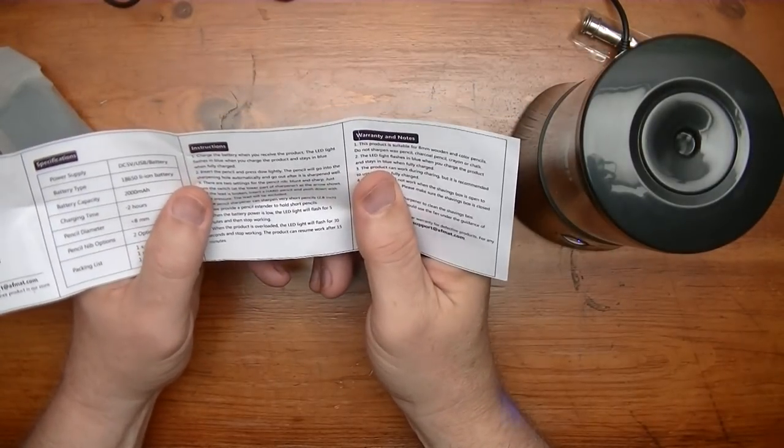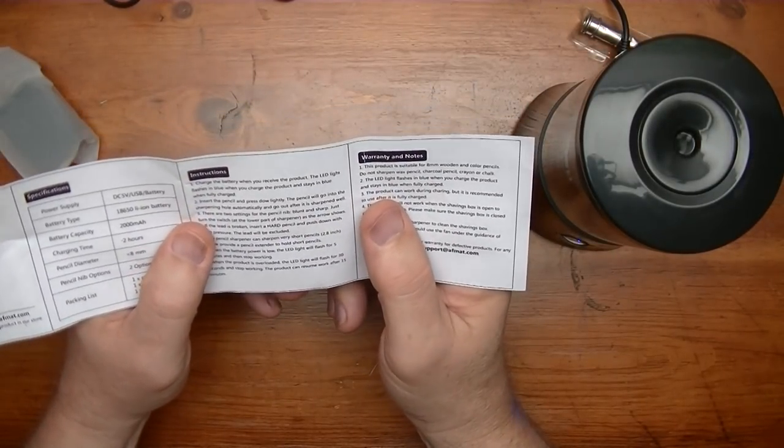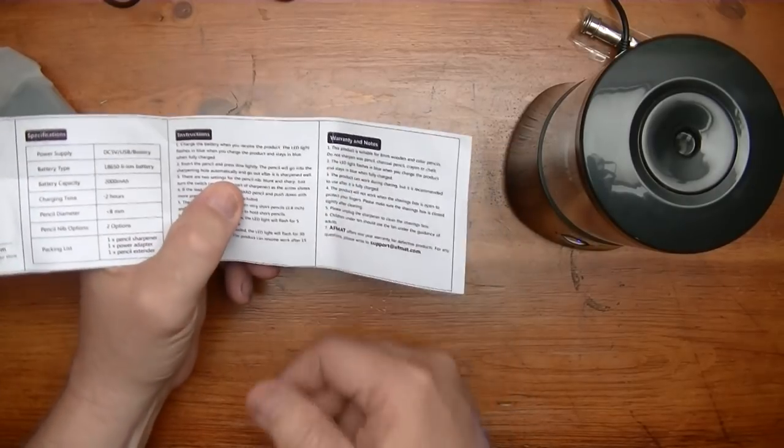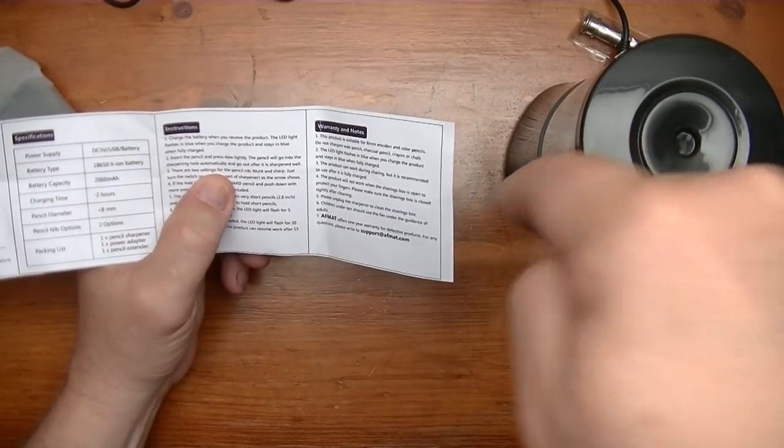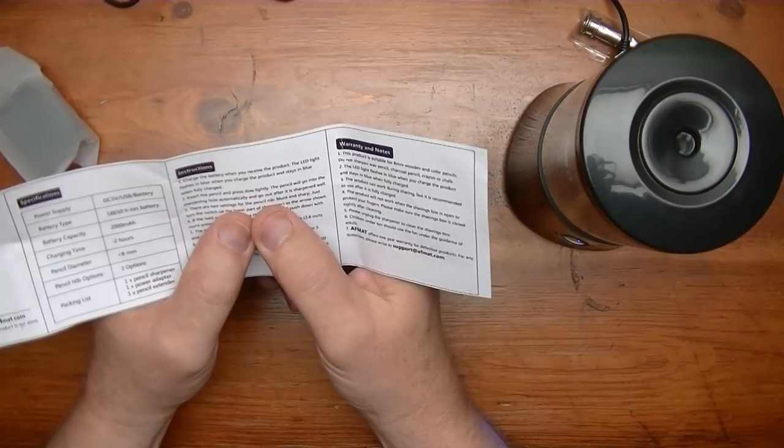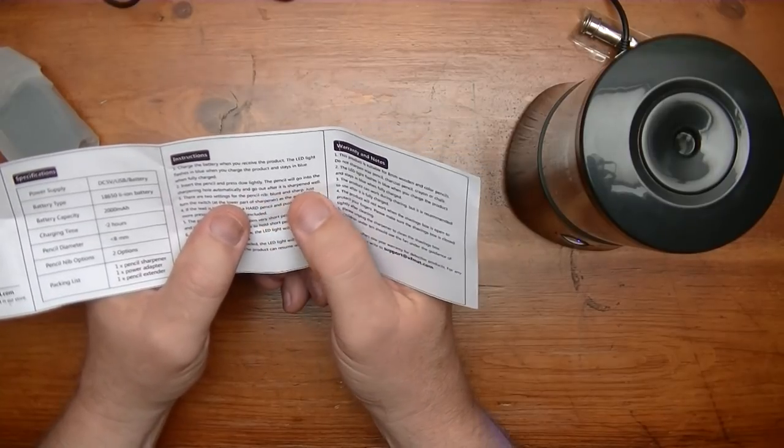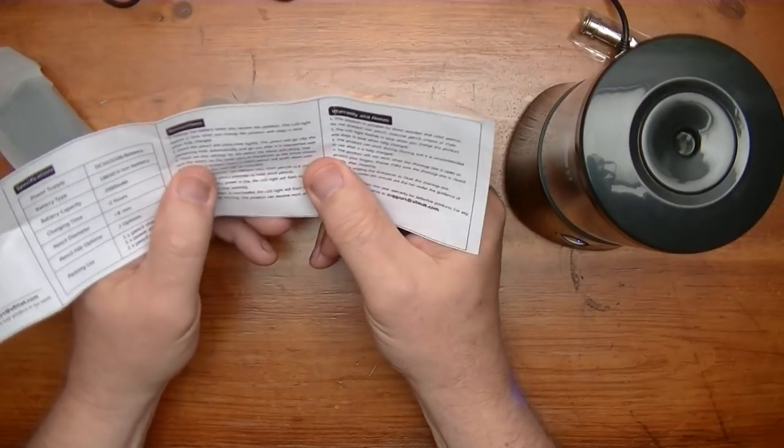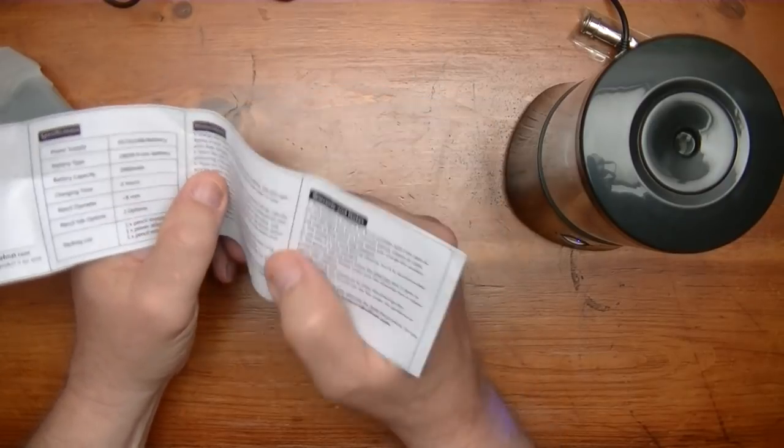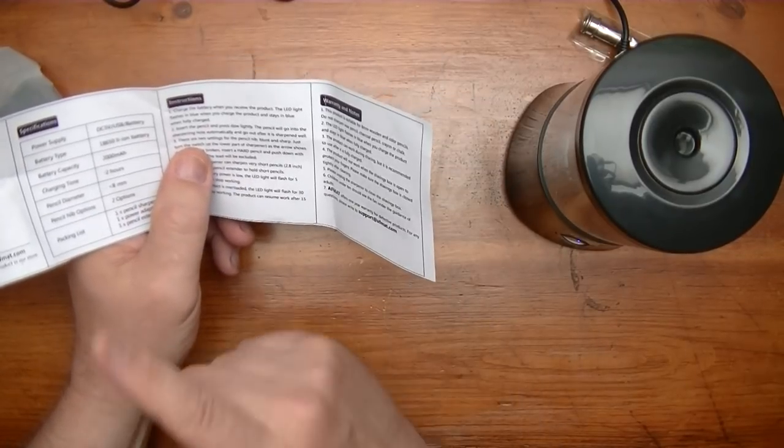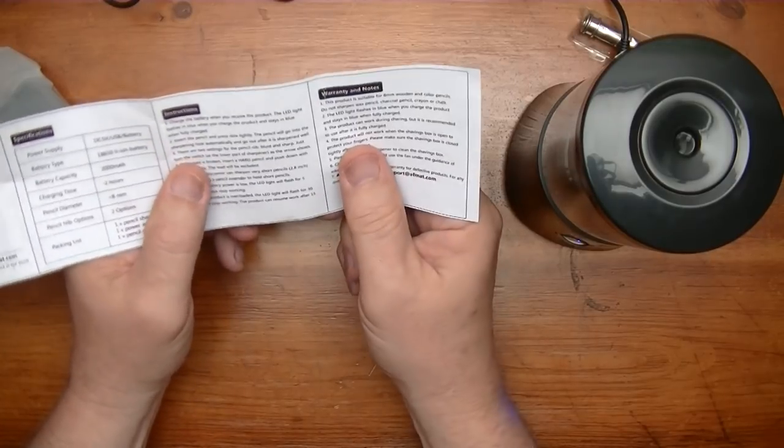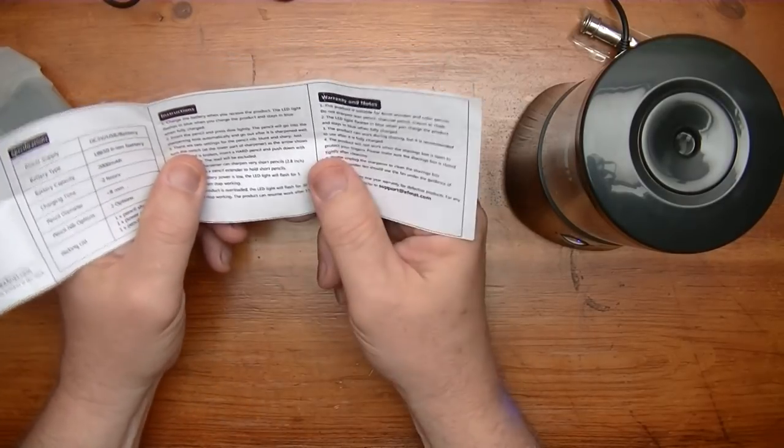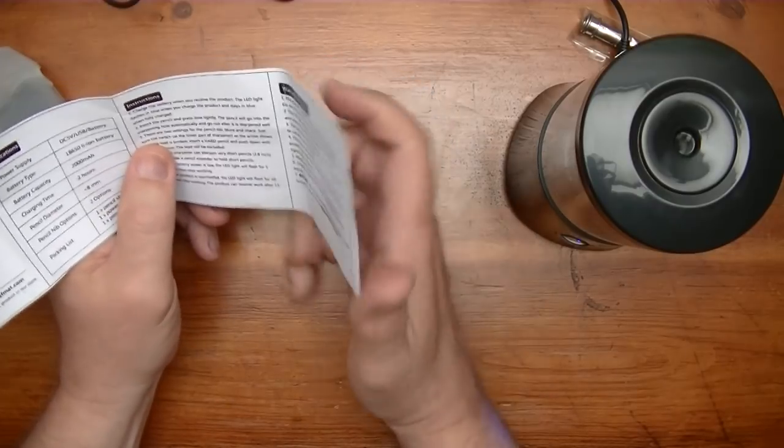Okay, the pencil will go into the sharpening hole automatically. It's an automatic pencil suckener. And go out after it's sharpened well. So it'll take it and it'll eject it by itself. That's different than the other one that I had that would make those really long points. That looks just like this one.